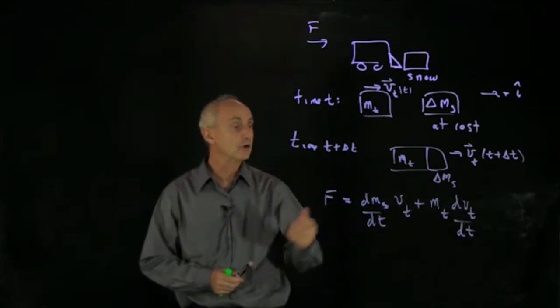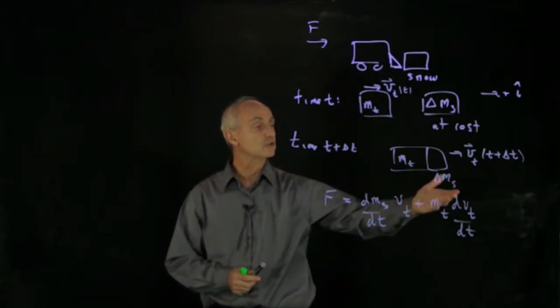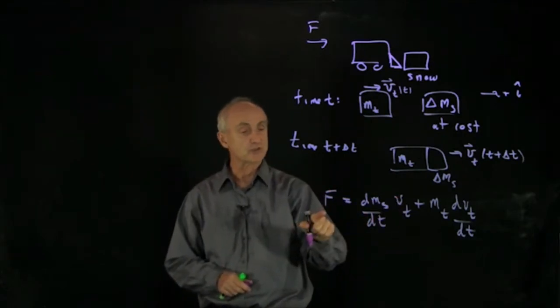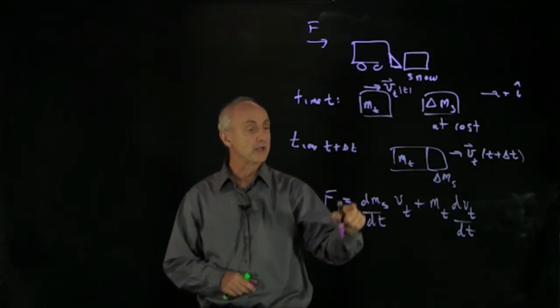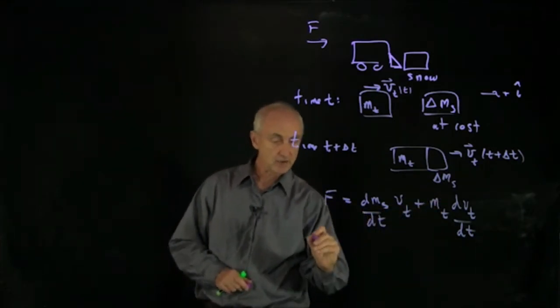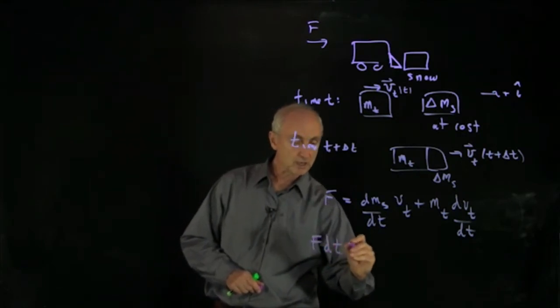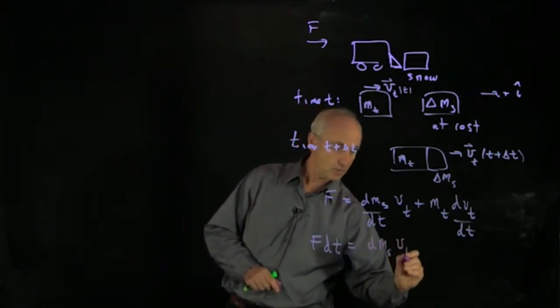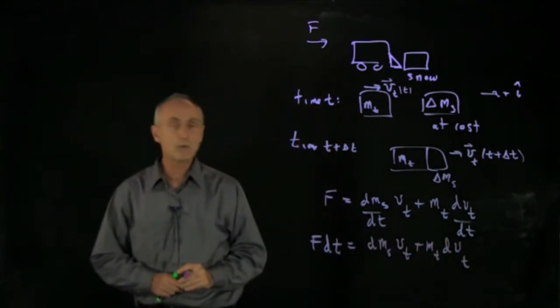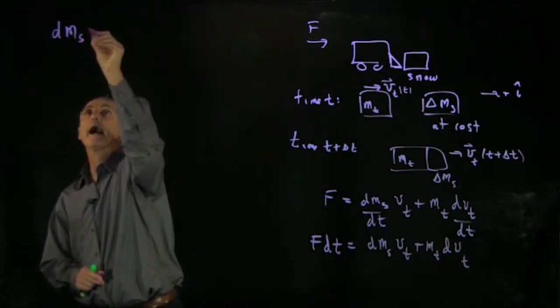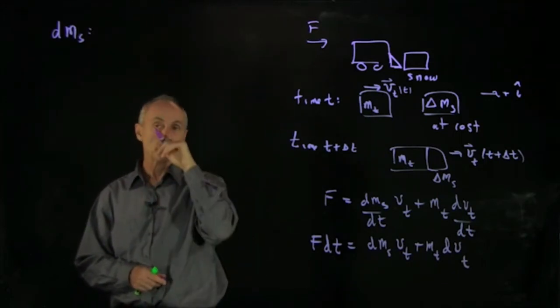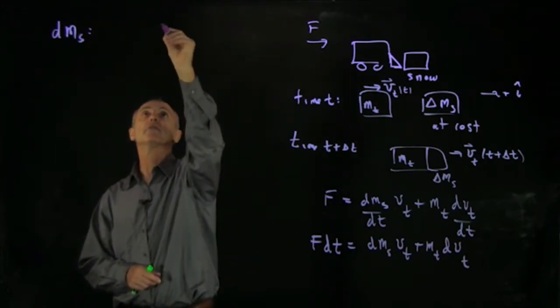So when we found our equation for describing the rate that the truck changes its speed, the snow plow, when it's pushing snow away, we wrote down our equation in terms of the external force on the truck, the rate that snow is being picked up by the truck, the velocity of the truck, mass of the truck, the rate of change of velocity of the truck. If we multiply our equation through by dt, we have the following equation. And now what we want to consider is we want to focus on how much dms is picked up in our infinitesimal time dt. So one way to think about that is let's do a little drawing.